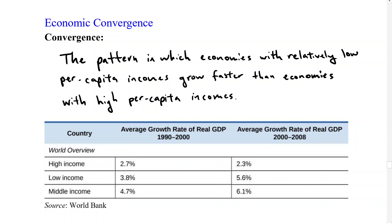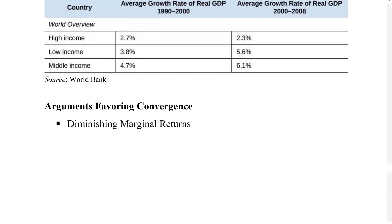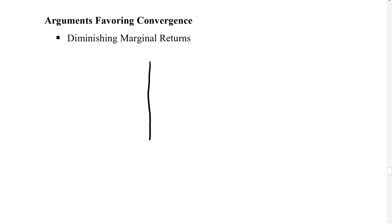Essentially, the lower- and middle-income countries are growing faster and converging — or catching up — to the higher-income countries. We're going to discuss a few ideas as to why that might happen. The first is this idea of diminishing marginal returns, which comes up a lot in economics. We can draw a little graph here to explain it.